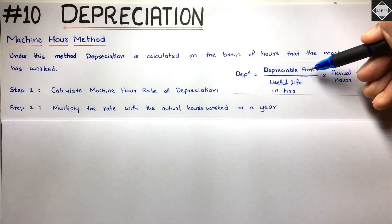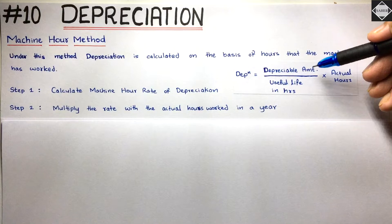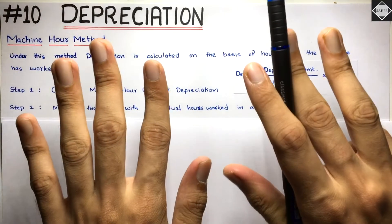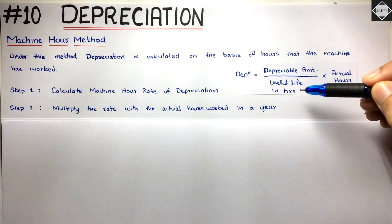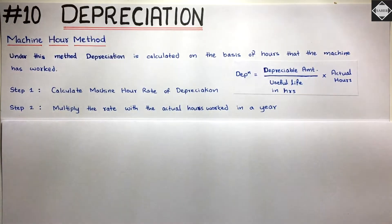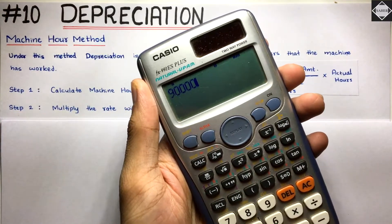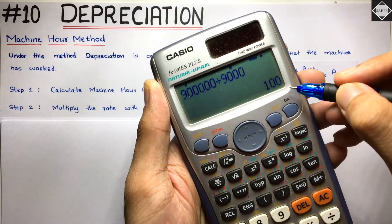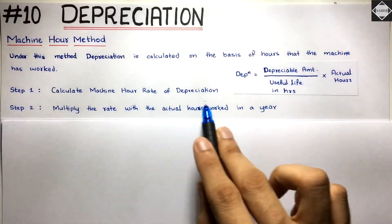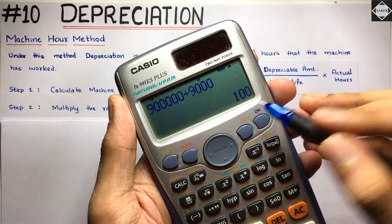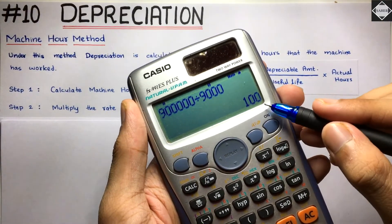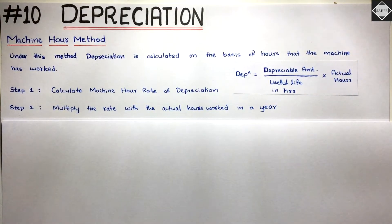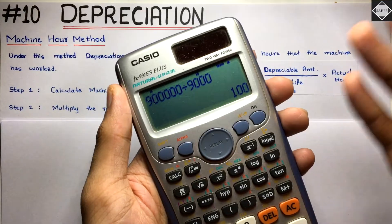To calculate the Machine Hour Rate, we take the depreciable amount — that is cost minus residual value. For example, if cost is 10 lakh and residual value is 1 lakh, then 10 lakh minus 1 lakh equals 9 lakh depreciable amount. We divide this by useful life in hours. Say useful life is 9,000 hours — so 9 lakh divided by 9,000 gives 100. That 100 is the Machine Hour Rate of depreciation — the depreciation per hour the machine is used.